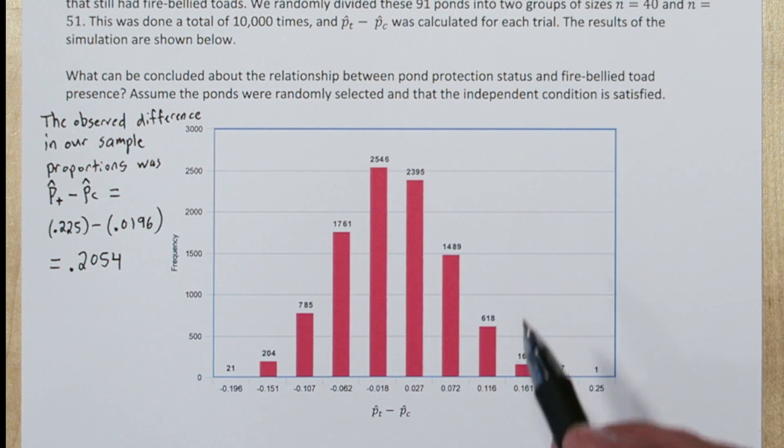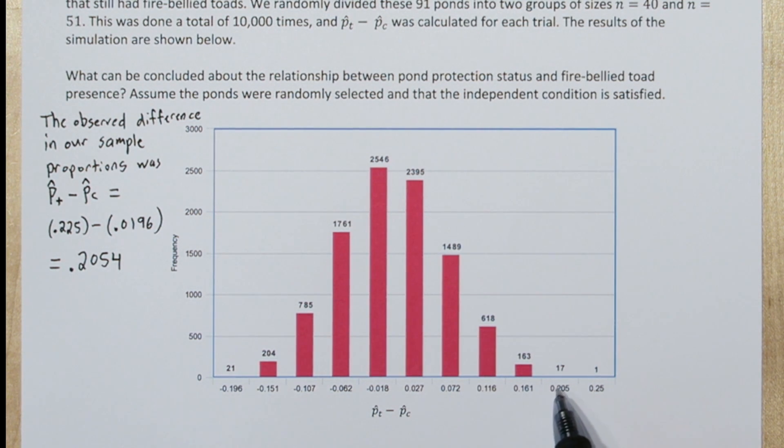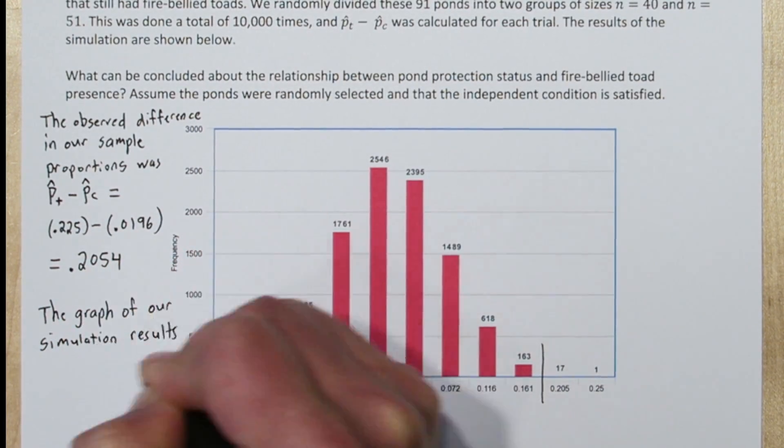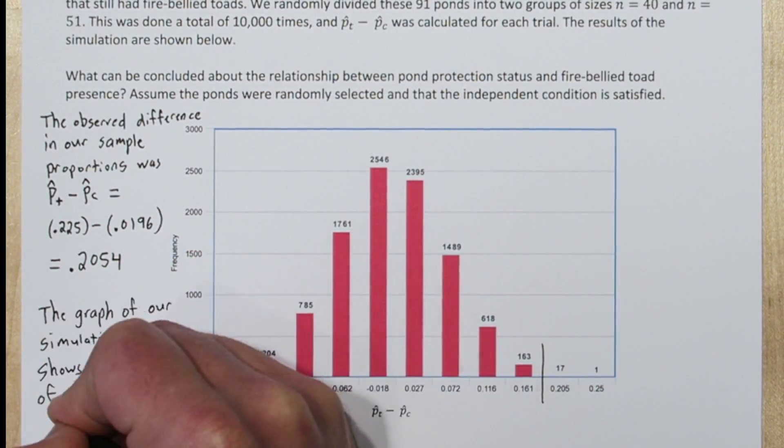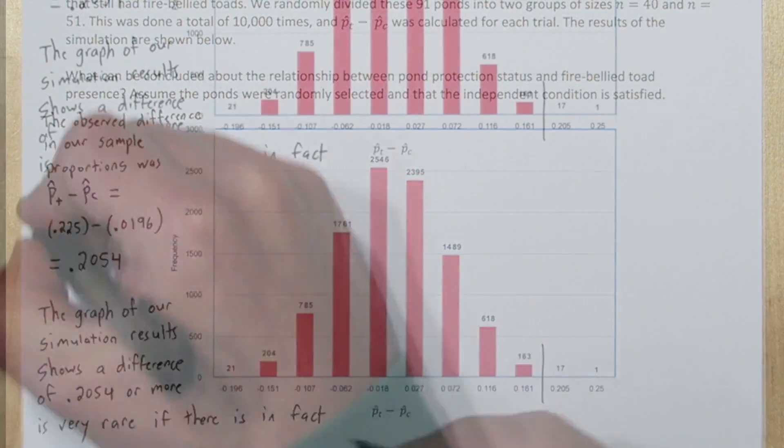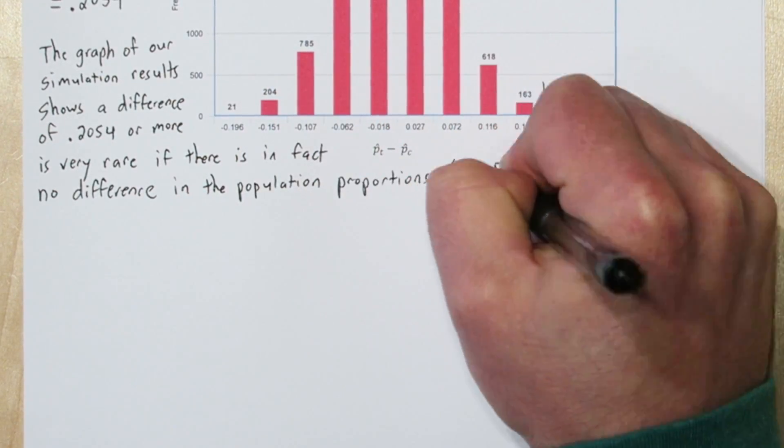When we look at our results here, we see that getting a difference as high as we did, 0.2054, only happened with these 18 samples out of 10,000. So we'll say the graph of our simulation results shows a difference of 0.2054 or more is very rare if there is in fact no difference in the population proportions, p-sub-t equals p-sub-c.